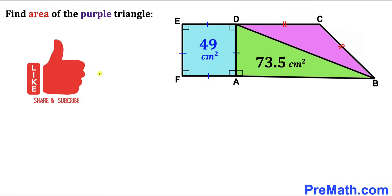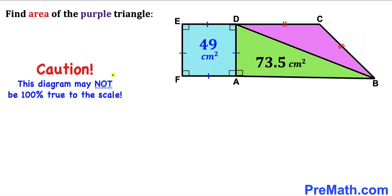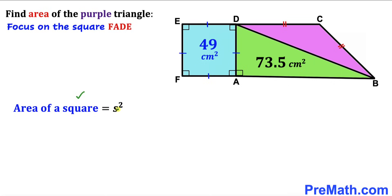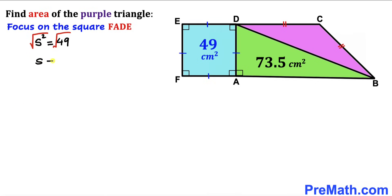Please keep in mind that this figure may not be 100% true to scale. For the blue square, its area is given as 49 centimeter square. Recalling the area formula: area equals s squared. So s squared equals 49, and taking the square root of both sides, the side length s turns out to be 7 centimeter across the board.